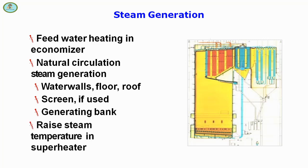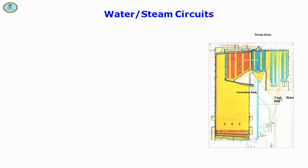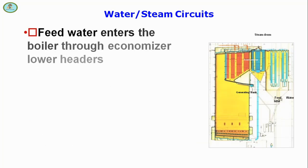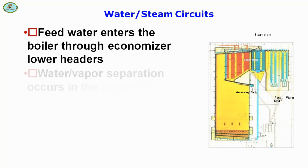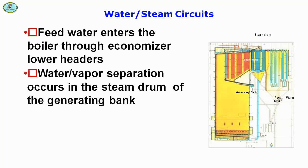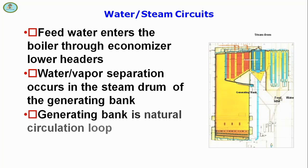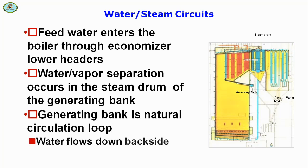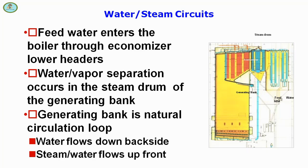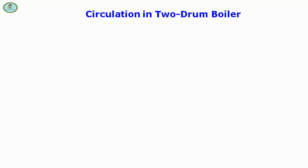Steam temperature rises through the superheater. In the water and steam circuit, feed water enters the boiler through the economizer and lower headers. Water-vapor separation occurs in the steam drum of the generating bank, which is a natural circulation loop where water flows down the back side and steam-water flows up the front.